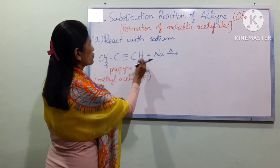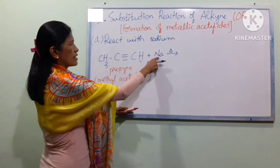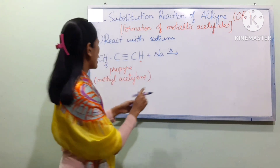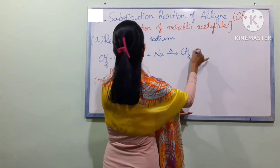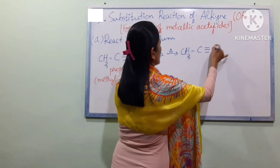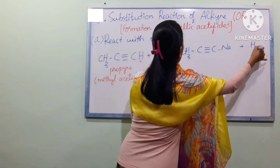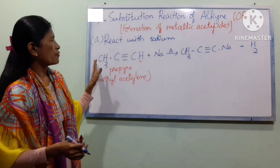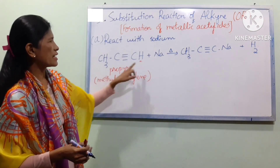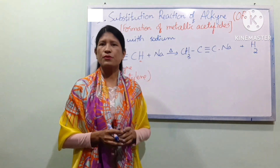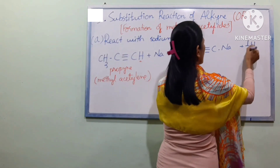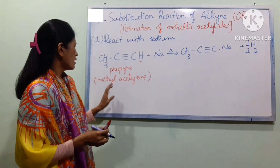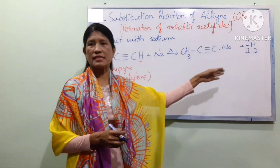CH3-C≡C-Na. Na2, Na2 carbon2. Hydrogen will be used — hydrolysis is what they used. The equation is half of the product.